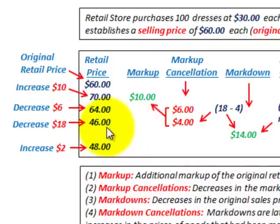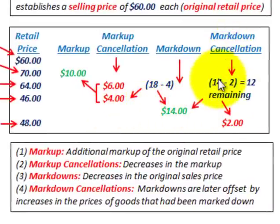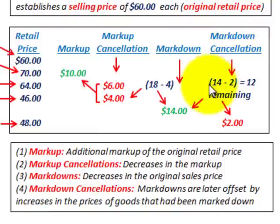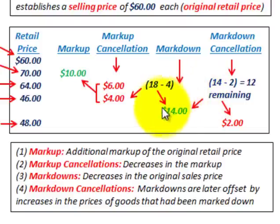After the clearance sale, the price was then increased from $46 to $48 — a $2 increase. At that point we had $14 in our markdown amount. That $2 increase would go against the markdown as a markdown cancellation, canceling $2 of the $14 markdown. The remaining markdown would be $14 minus $2, giving us $12 remaining in our markdown. That's where we would stop at this point.